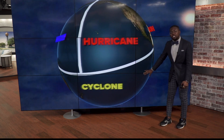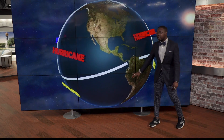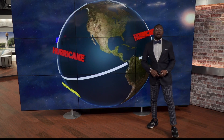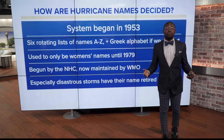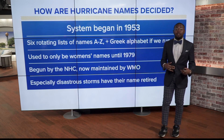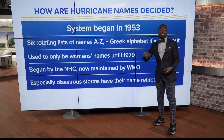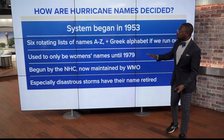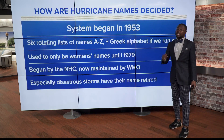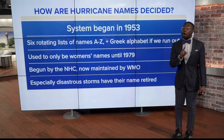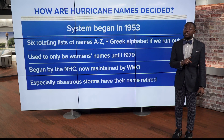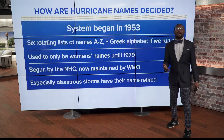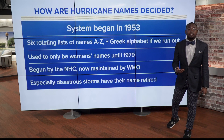This one area closer to parts of South America doesn't get hurricanes very often because it is so cold down there, but if they did happen to get one, it would be called a cyclone. As for the history of how these names were decided along the Atlantic, this system began in 1953. We have six rotating lists going A through Z, and also the Greek alphabet in case we run out, which has happened a couple of times. It used to only be women's names until 1979 when men's names were included as well, and this was all begun by the National Hurricane Center, though in current times it is done by the World Meteorological Association.